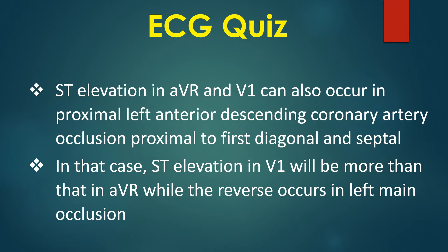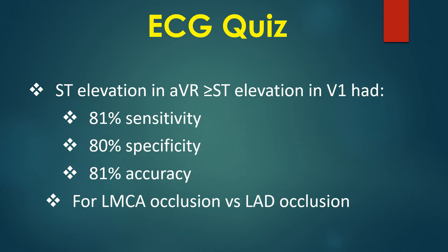In that case, ST elevation in V1 will be more than that in AVR, while the reverse occurs in left main occlusion. ST elevation in AVR greater than or equal to ST elevation in V1 had 81% sensitivity, 80% specificity, and 81% accuracy for left main occlusion versus LAD occlusion.